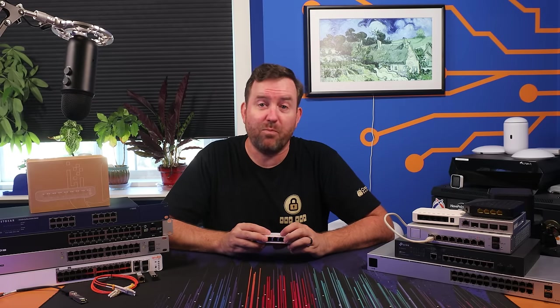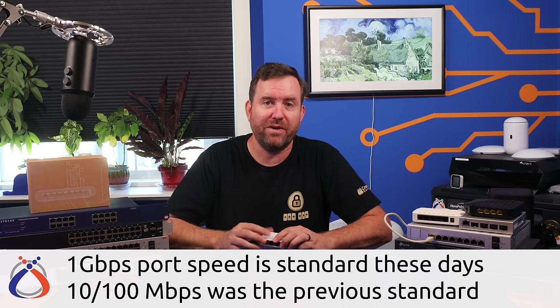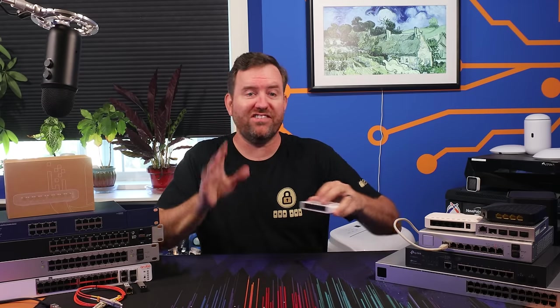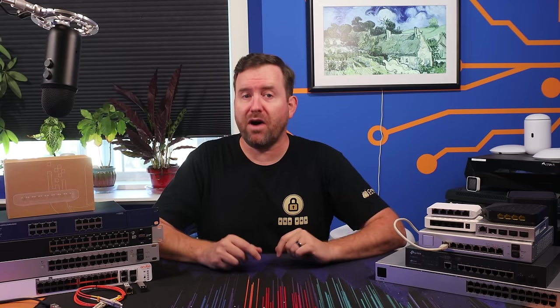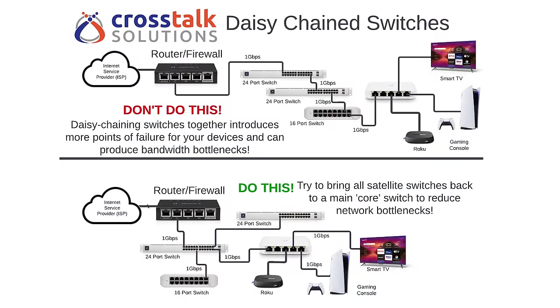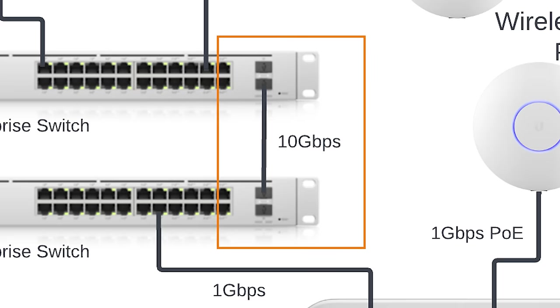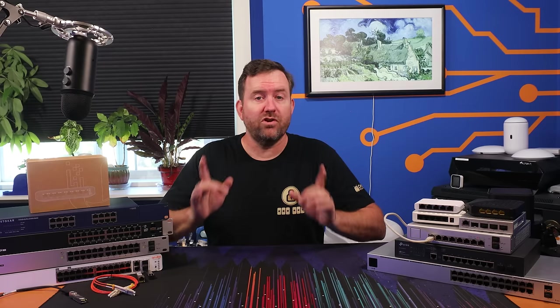Switches with a one gigabit port speed are pretty standard these days, though the older standard was 10/100 — meaning 10 or 100 megabit, or one tenth the speed of today's standard gigabit switches. But if you're designing a network with many switches, you don't want to bottleneck those switches by adding in, for example, a 24-port switch using gigabit ethernet out to another 24-port switch and then another 16-port switch further down the line — this is the daisy-chaining I mentioned earlier. This is why many models of larger switches and routers have uplink ports that provide 2.5 or 10 gigabit connectivity, typically meant to connect switches together so that if multiple devices are maxing out their one gigabit switch ports, you're not cramming all of that throughput into a single gigabit port all the way back to your router.